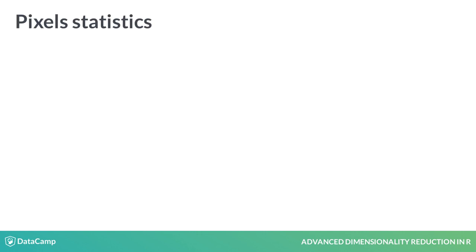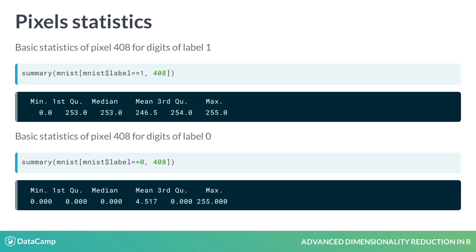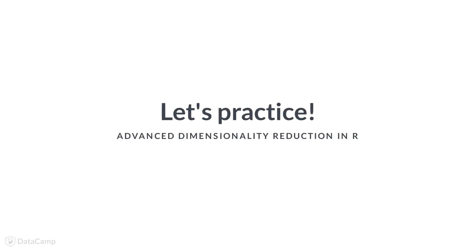We can expect that same digits will have similar values in each pixel. So, one assumption is to compute the pixel statistics of the same digits. For instance, here, we showed the statistics of digits 1 and 0 for pixel 408. As you can see, they have extremely different values for that pixel. Let's get started with the MNIST dataset and do some data experiments.